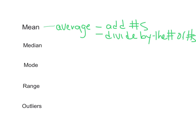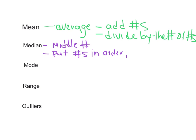To find the median, the median is the middle number. So what you're going to do to find the median is you're going to put the numbers in order and then find the middle. I'll do some examples of this in a little bit.